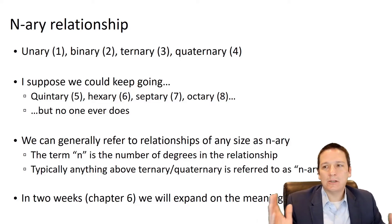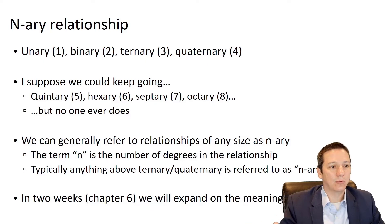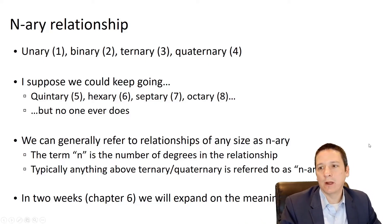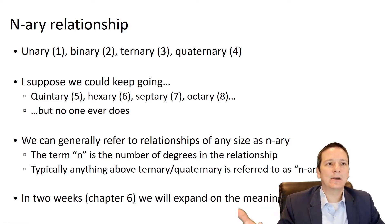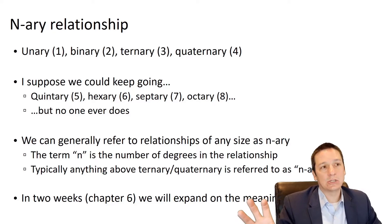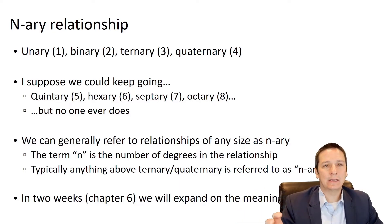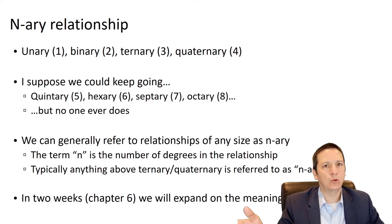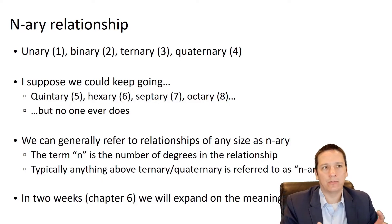So unary, binary, ternary, quaternary — at a certain point we just generically say n-ary, where n is just a variable representing the number of degrees in a relationship. This idea of the degrees of a relationship is going to come back in a slightly different form when we start talking about relational data modeling, which I think is in two weeks. Keep in mind we're going to be coming back around to what right now is a very simple concept: the number of entities in a relationship.